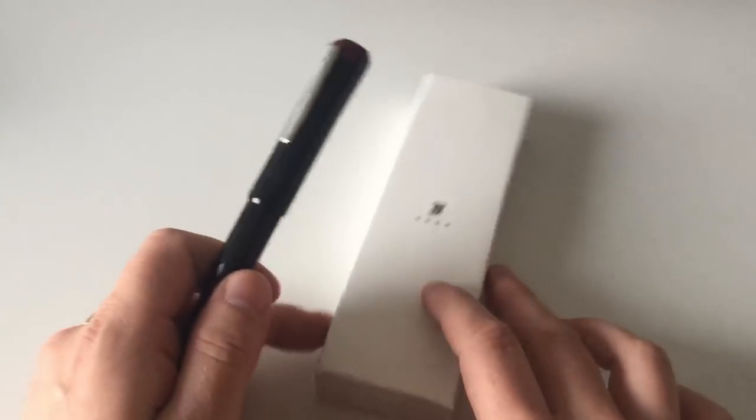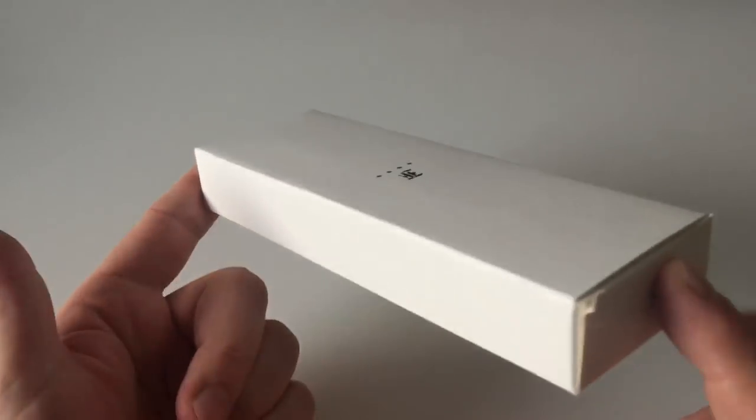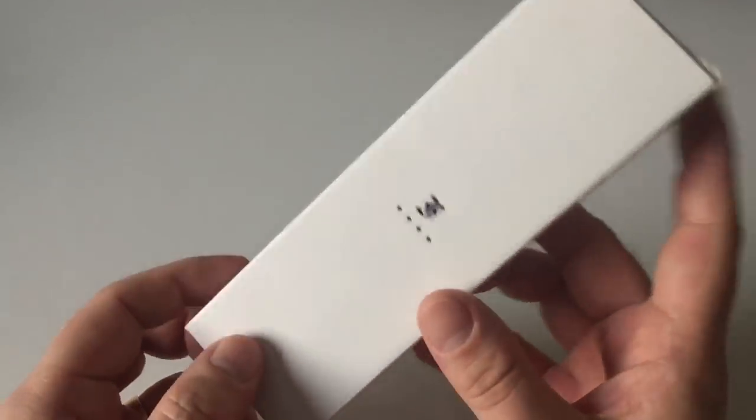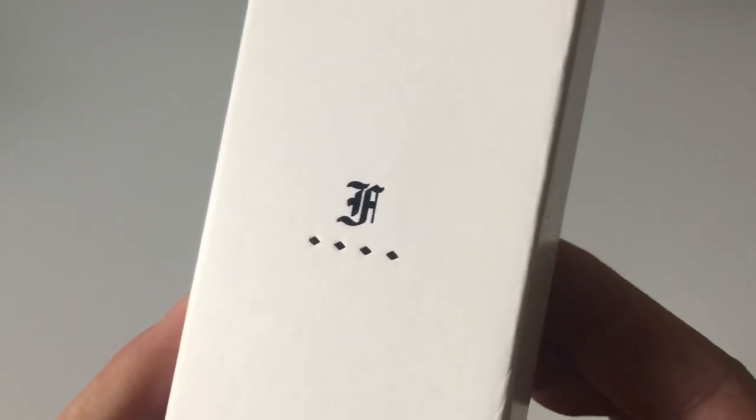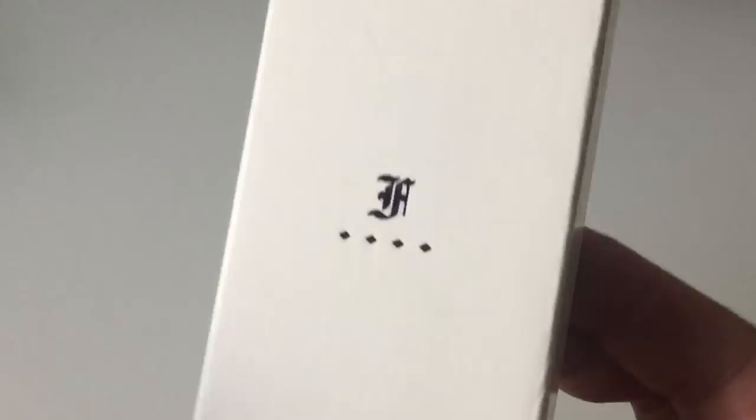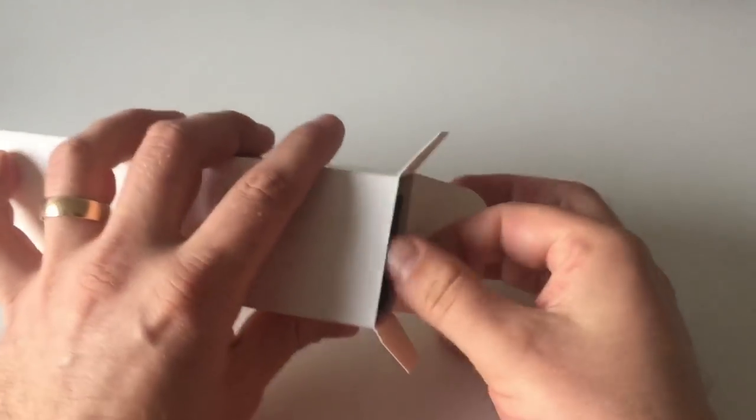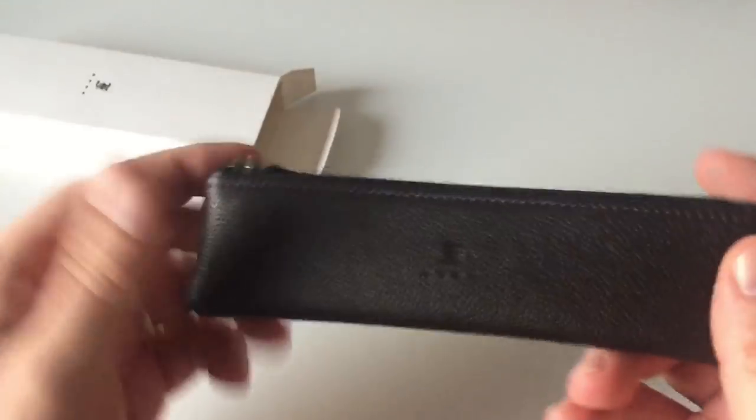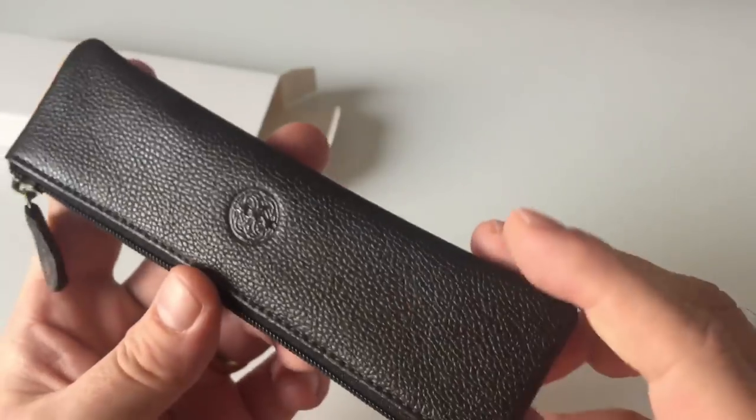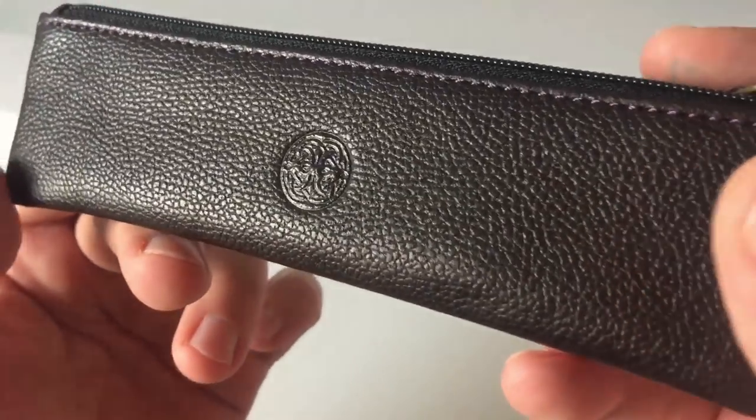We'll talk a little bit about the pen of course in a minute. Franklin Christoph has opted here for a very simple white cardboard package with the Franklin Christoph logo and these four diamond-shaped thingies on here. You open up that box and out comes a small leather pouch, a leather zip pouch with the Franklin Christoph logo on it, and I find that's really cool.